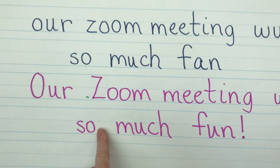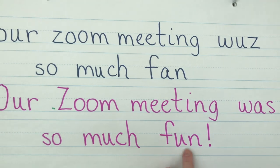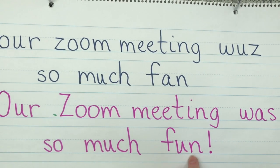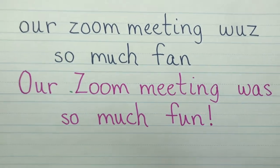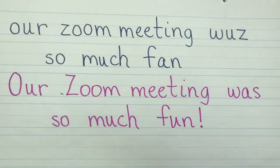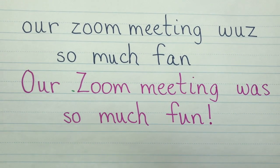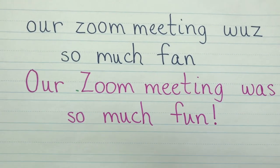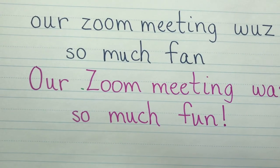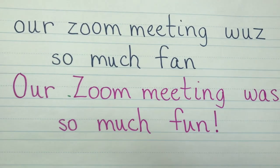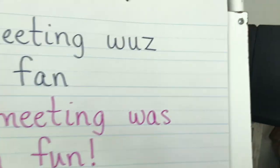So: 'Our Zoom meeting was so much fun!' — not 'fan,' we want 'fun.' I ended the sentence with an exclamation point because I had so much fun. Does anyone see a digraph? Here's a hint — it goes 'ch.' There it is: the CH at the end of 'much.' Make any fixes you need, and then we'll move on to our poem.